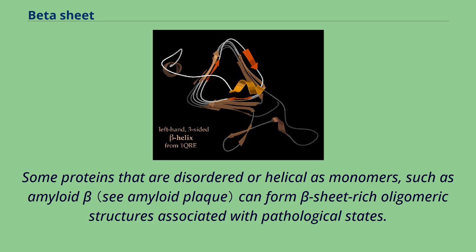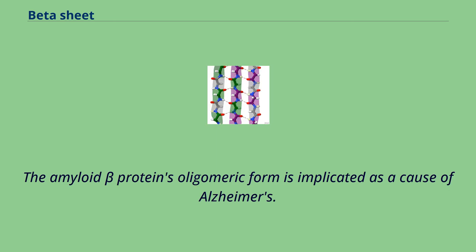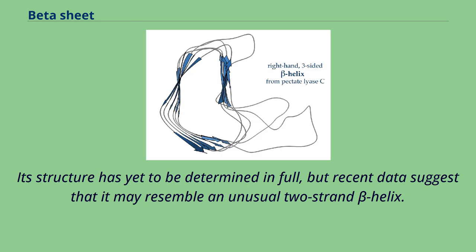Some proteins that are disordered or helical as monomers, such as amyloid beta, can form beta sheet-rich oligomeric structures associated with pathological states. The amyloid beta protein's oligomeric form is implicated as a cause of Alzheimer's. Its structure has yet to be determined in full, but recent data suggest that it may resemble an unusual two-strand beta helix.